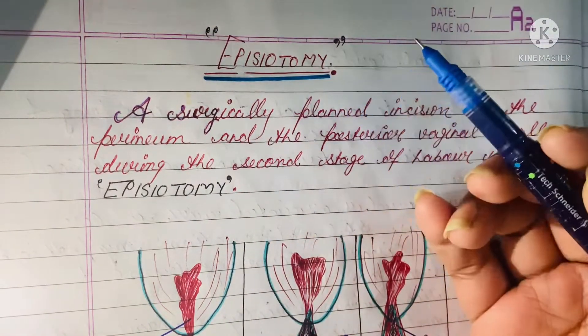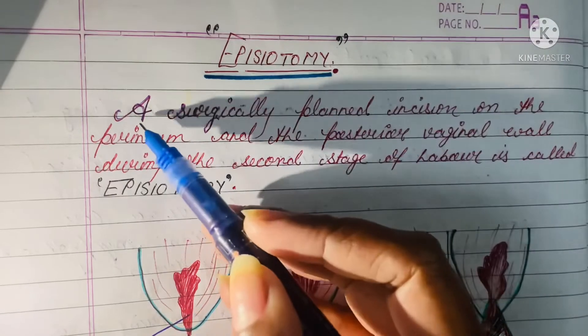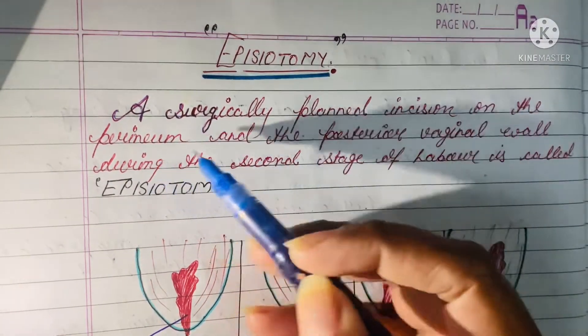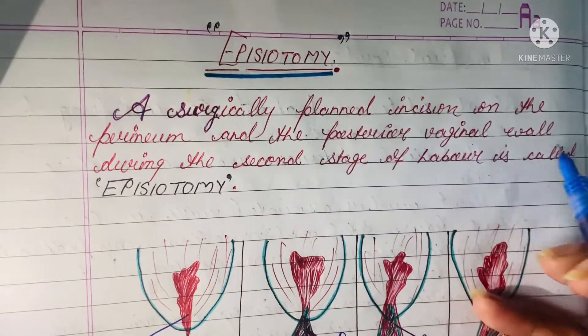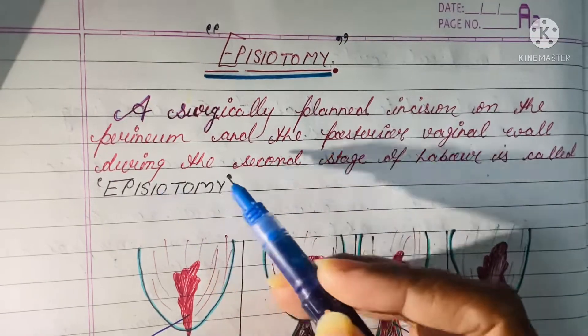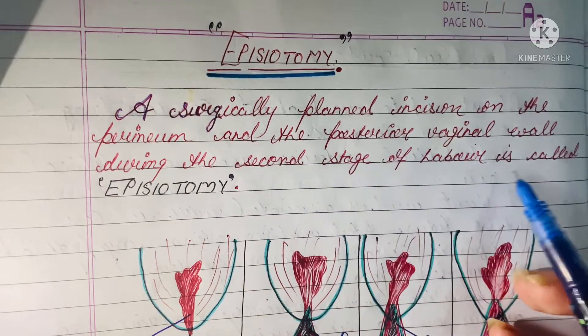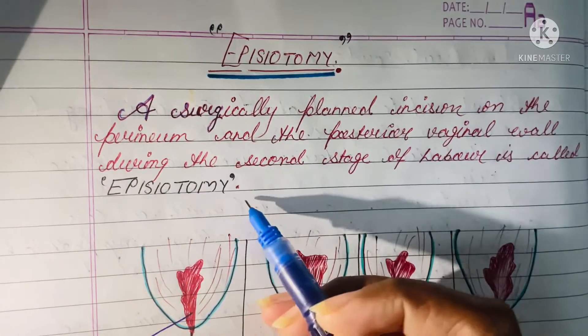First of all, let's see the definition of episiotomy. A surgically planned incision on the perineum and the posterior vaginal wall during the second stage of labor is called episiotomy.